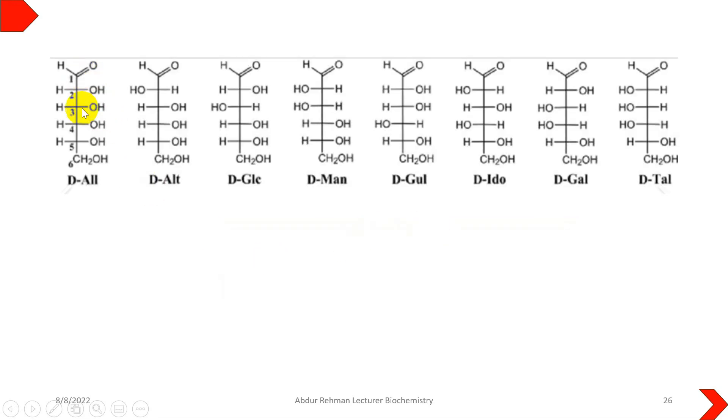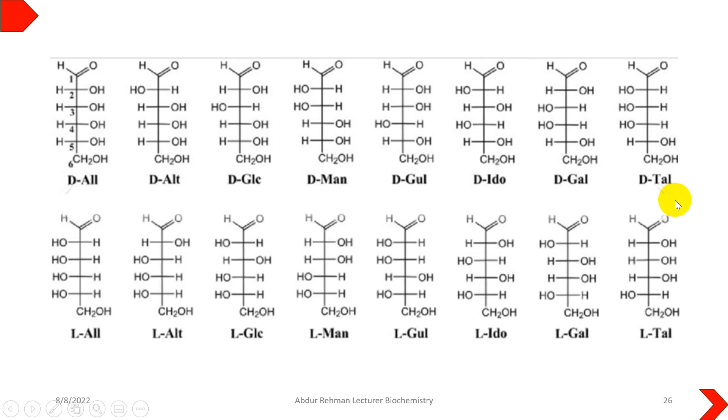Here are the isomers of glucose, which include allose, altose, gulose, mannose, glucose, idose, galactose, and talose. The L isomers of all these will be mirror images of D isomers at the asymmetric carbon.